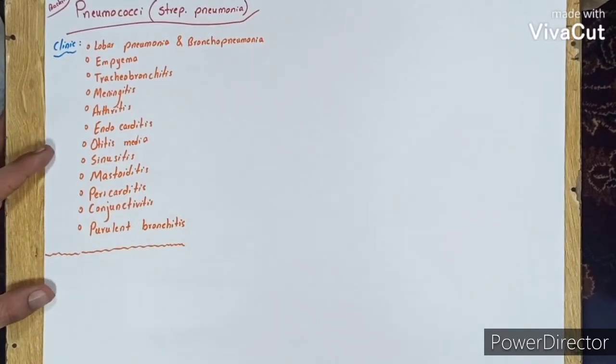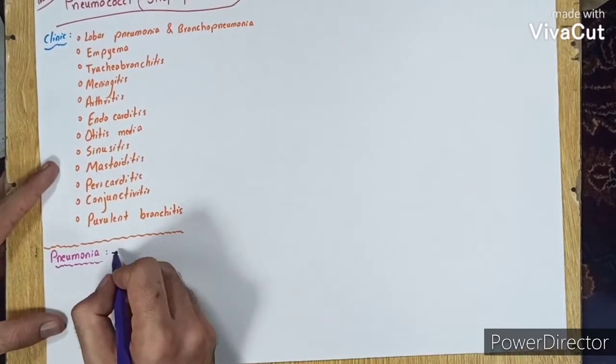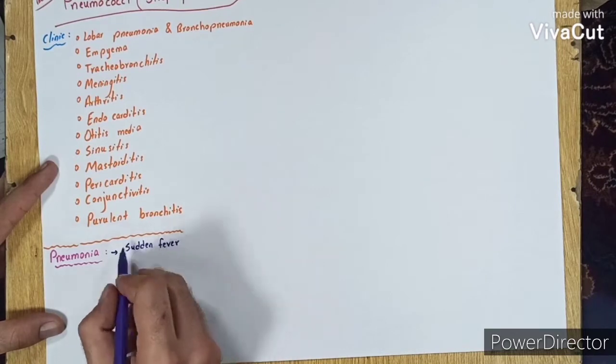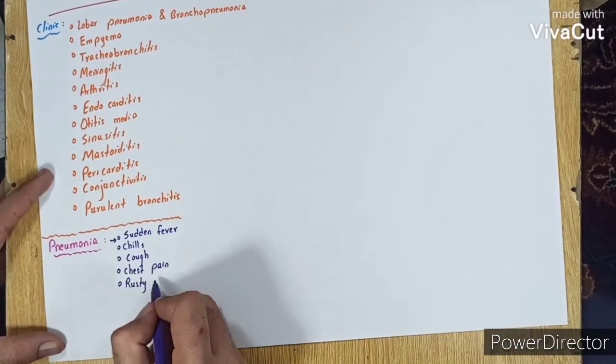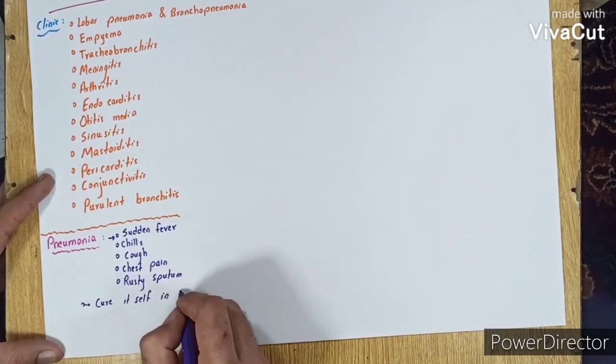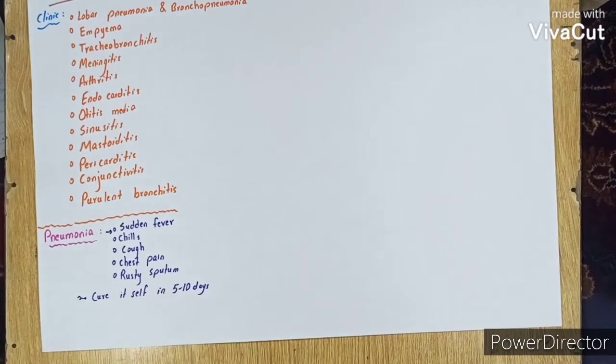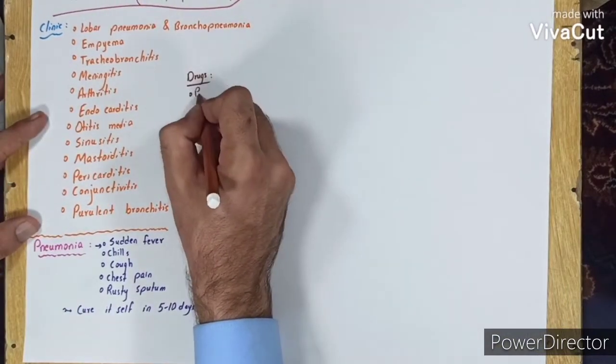Pneumonia clinical features include sudden fever, chills, cough, chest pain, and rusty sputum, which may cure itself in 5 to 10 days. Drugs used in pneumococcal disease include: